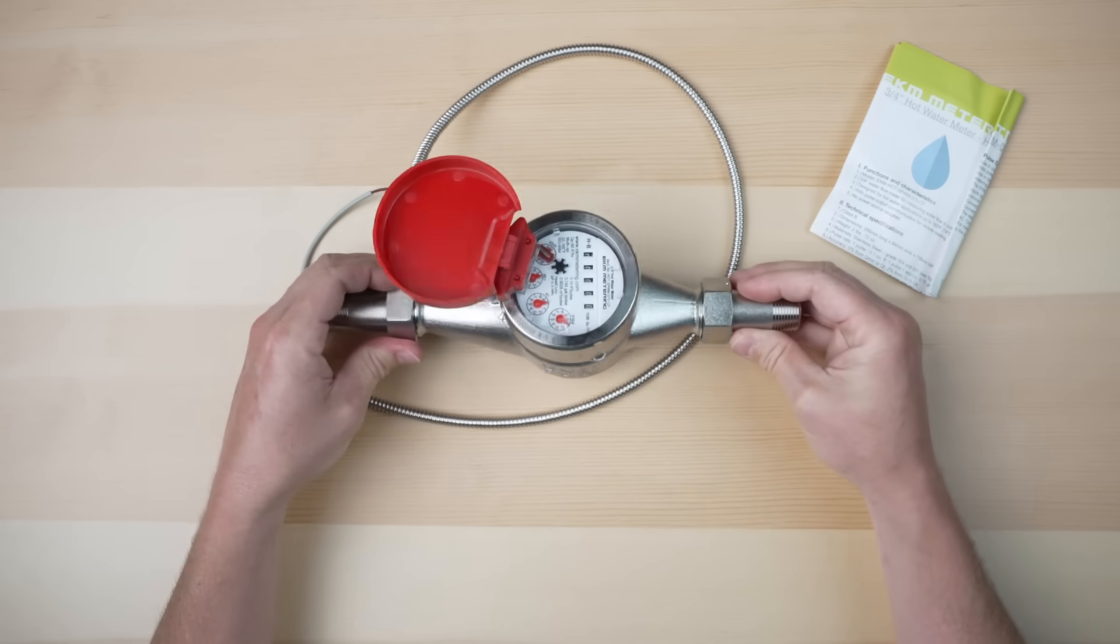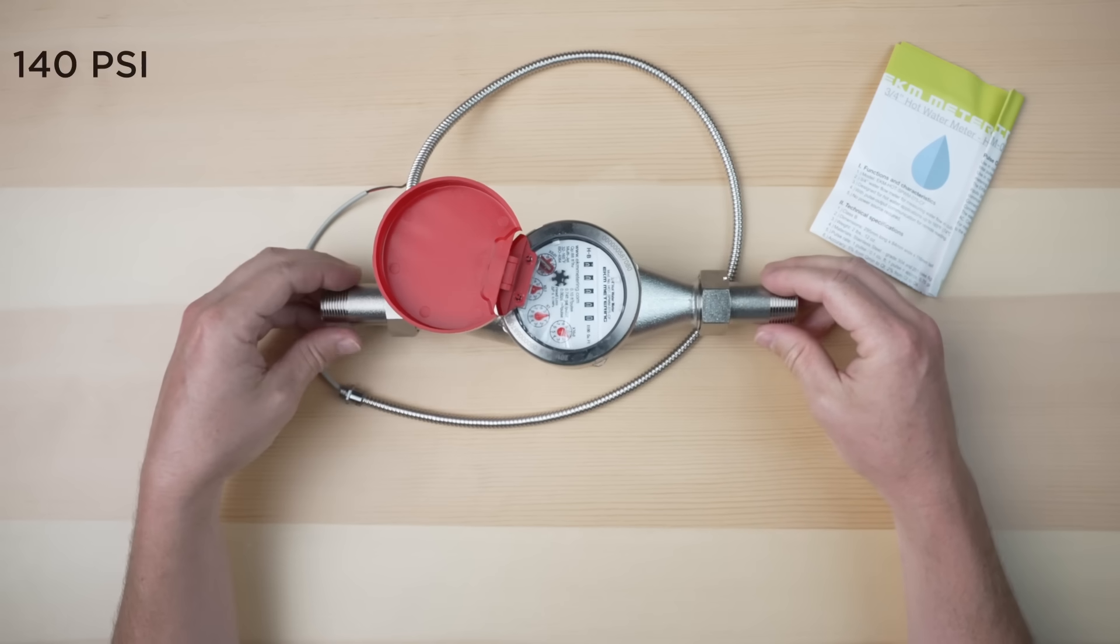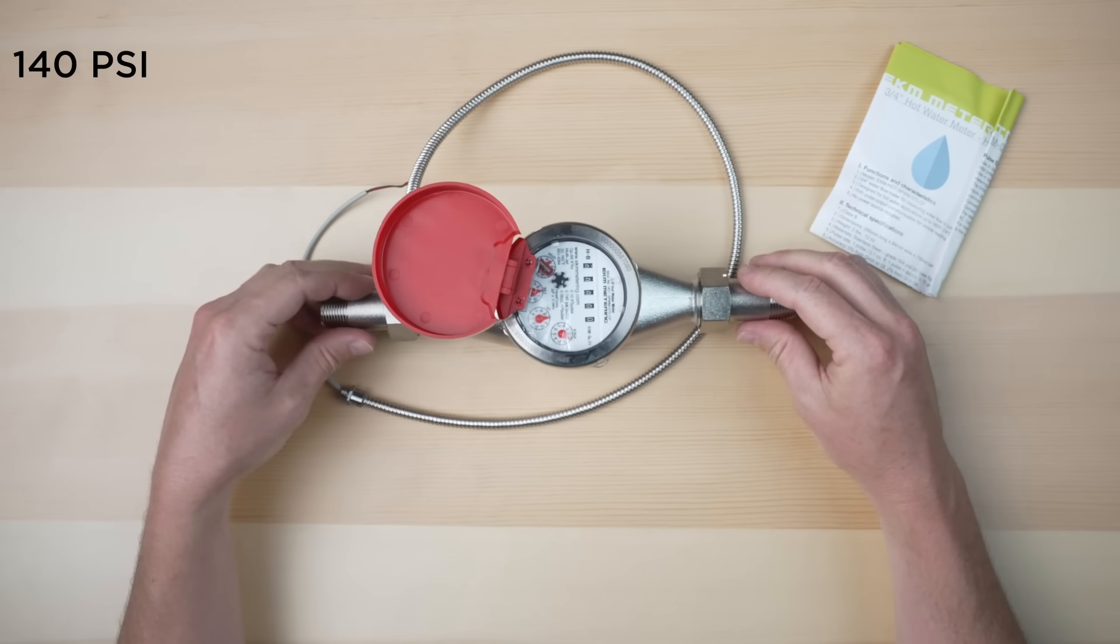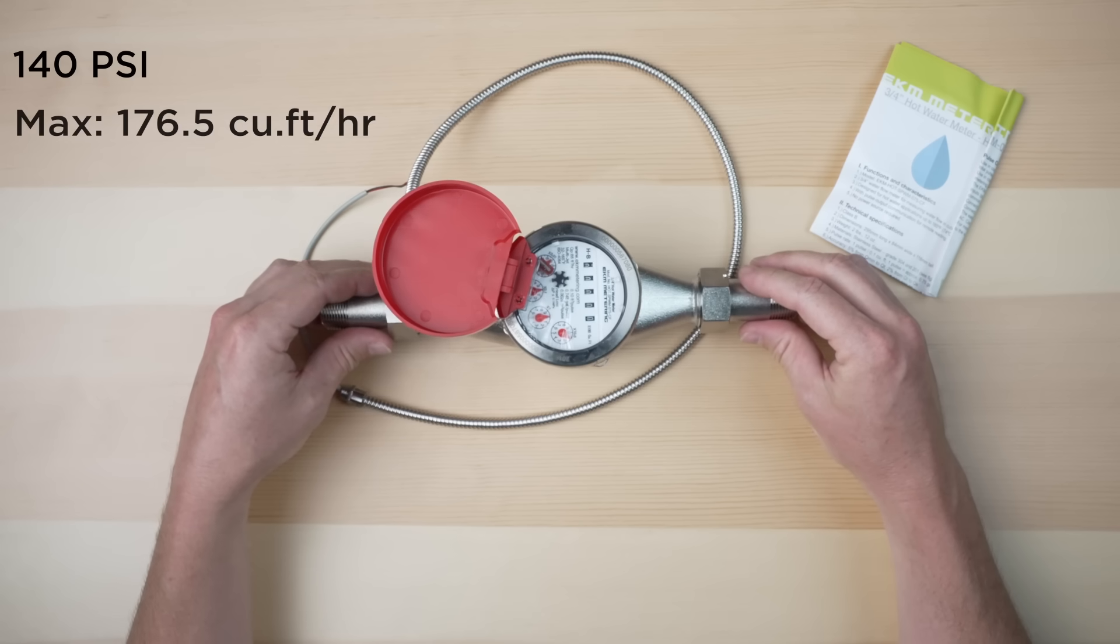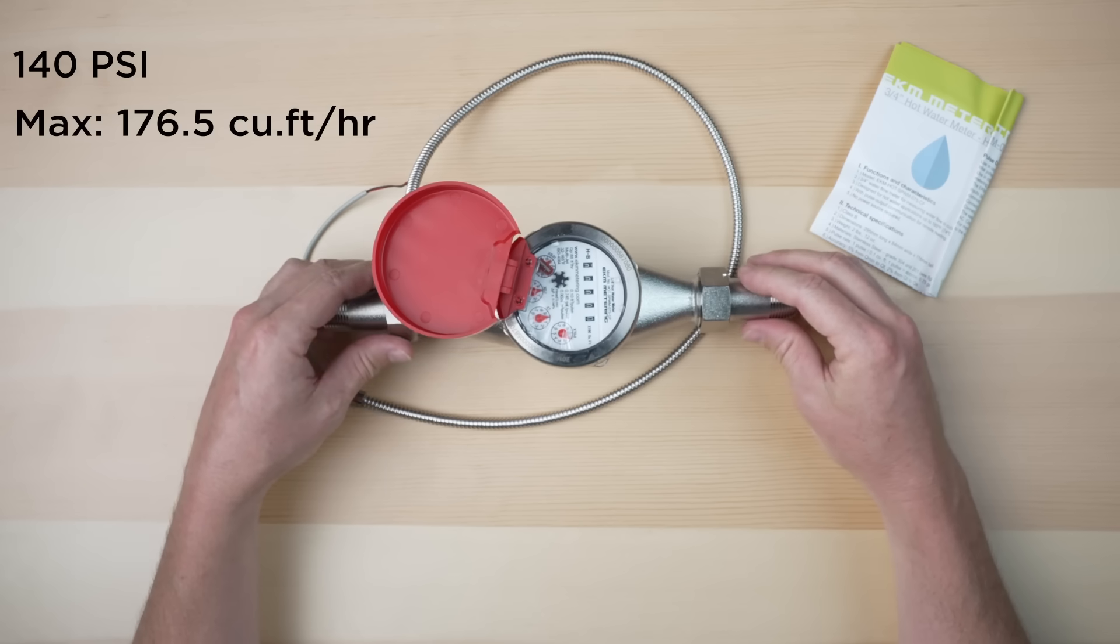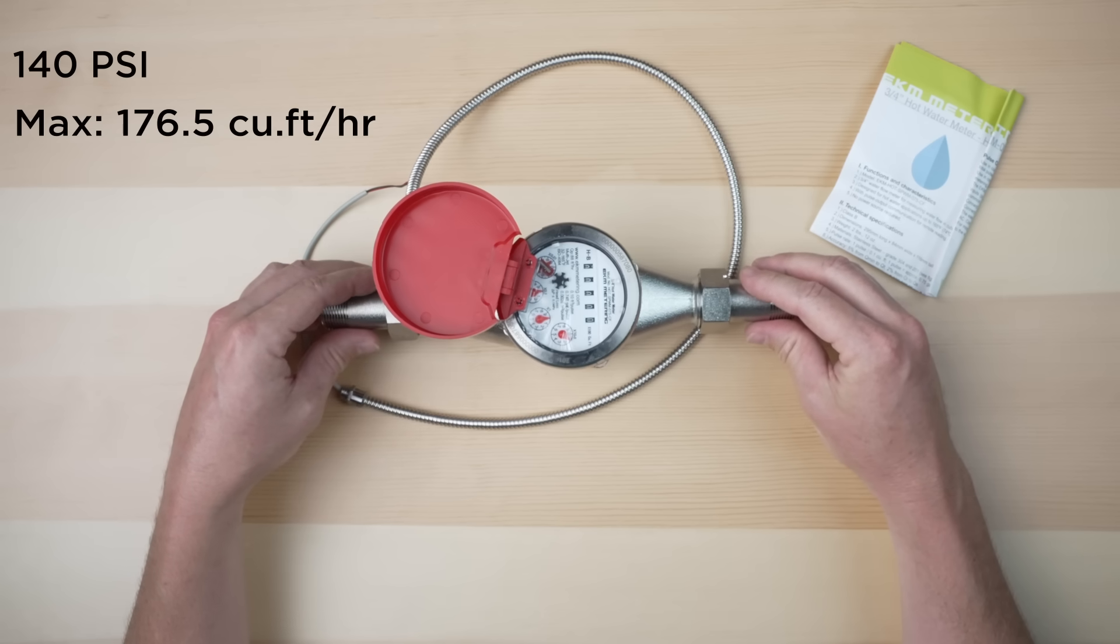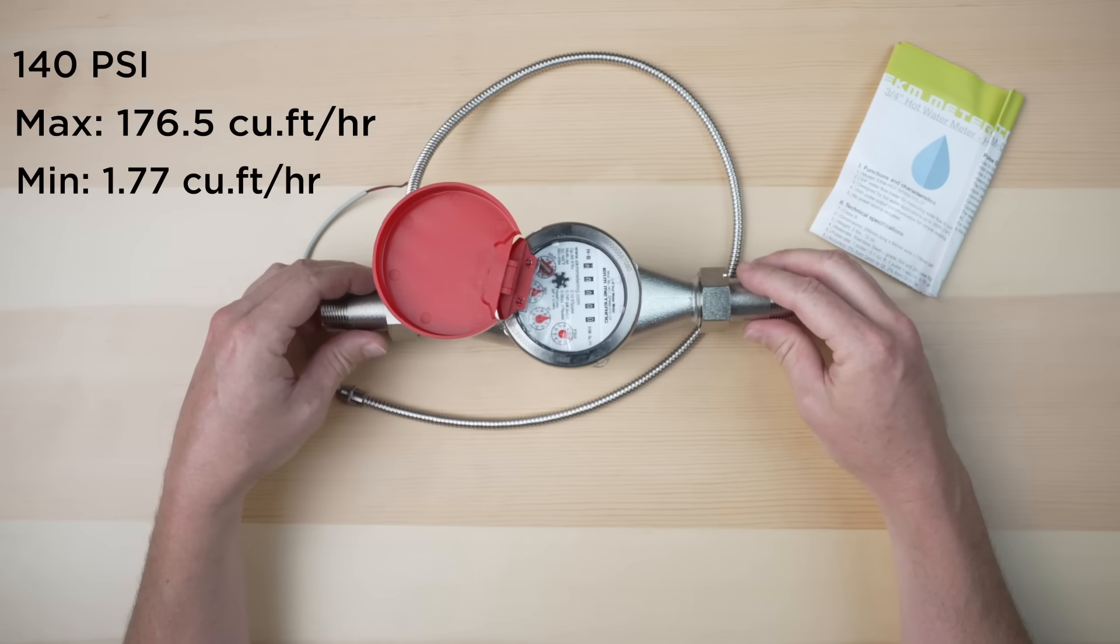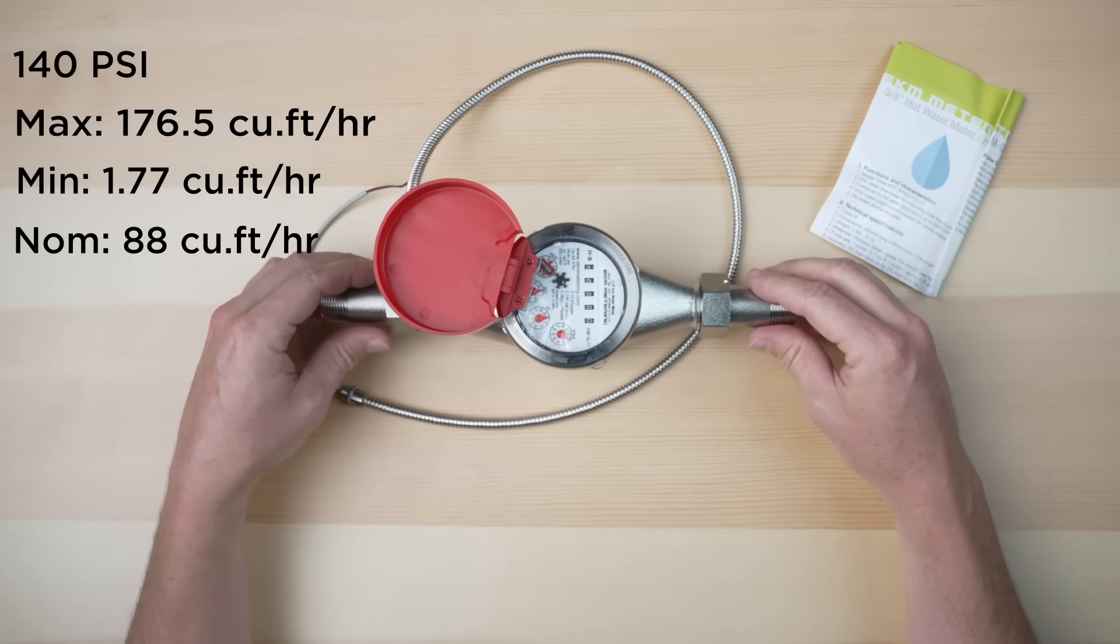The max operating pressure is 140 psi. The max flow rate is 176 and a half cubic feet per hour. The minimum flow rate is 1.77 cubic feet per hour. And the nominal flow rate is 88 cubic feet per hour.